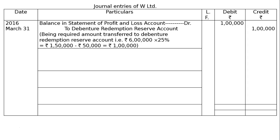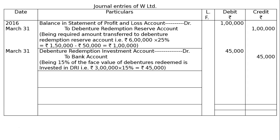The next entry will be debenture redemption investment account debited to bank account for rupees 45,000 on the same day. You can also invest it on April 1, 2016. This is being 15% of the face value of debentures redeemed invested in debenture redemption investment. For example, rupees 3 lakhs at 15% equals rupees 45,000, appearing in both debit and credit columns.